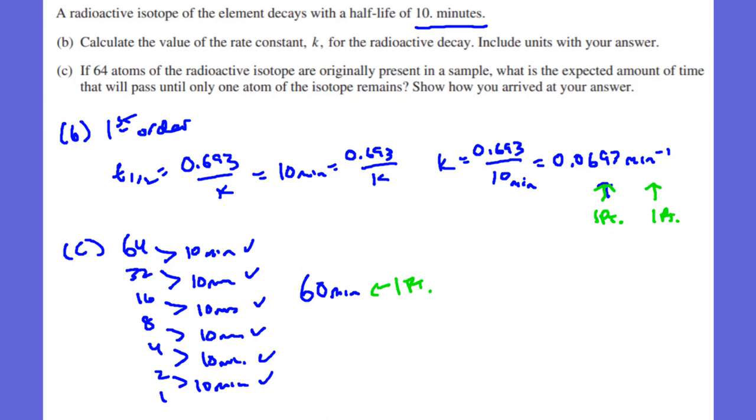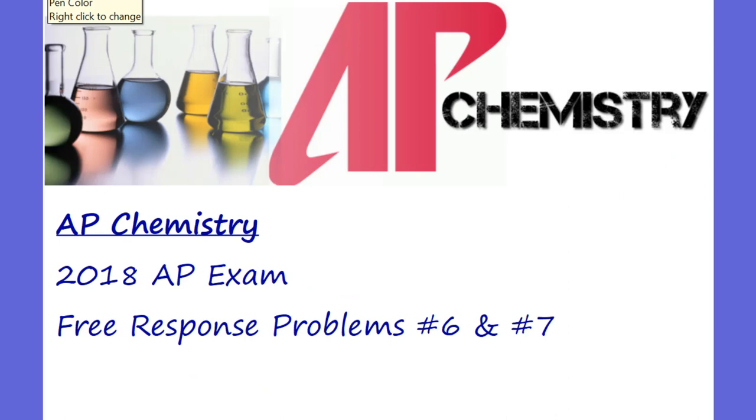So number 7, worth 4 points, 1 point for nitrogen, 1 point for the number, 1 point for the units, 1 point for 60 minutes. That was problems number 6 and 7. That's the 2018 AP Chem Exam. Make sure you have a good weekend, and make sure you keep going after and studying AP Chem. Thanks guys. Bye.